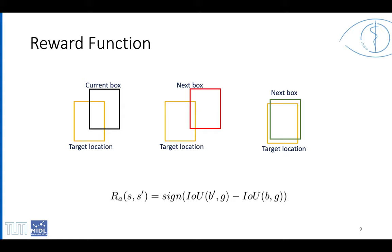The intersection over union between the current box and the next possible box is the signal driving the agent. The reward is binarized using this formula. If the intersection over union after taking certain action decreases, the agent receives a negative reward. If the intersection over union increases, the agent receives a positive reward.